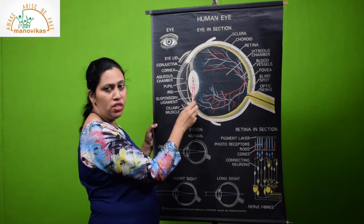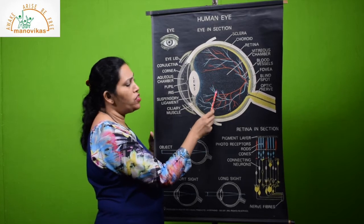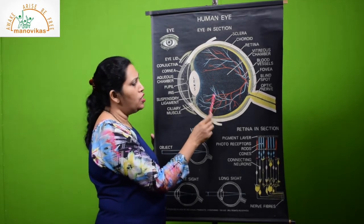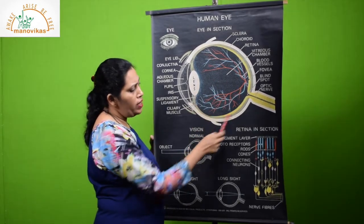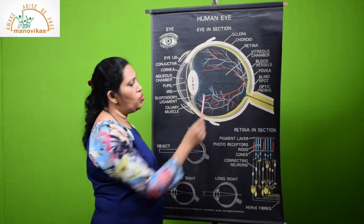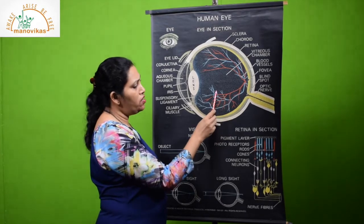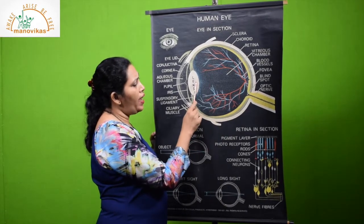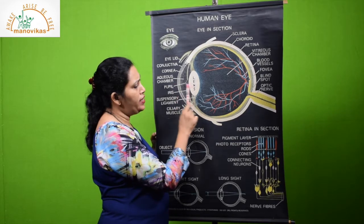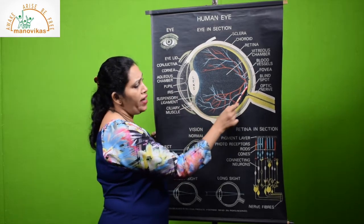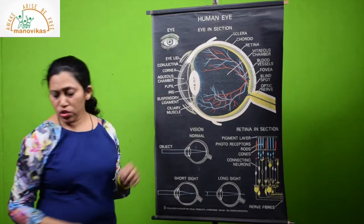It nourishes them, and the function of the vitreous humor is to keep the eyeball in spherical shape. So this is full, filled with the semi-liquid that is vitreous humor. Another thing is the vitreous humor directs the light, which has entered, to the retina.